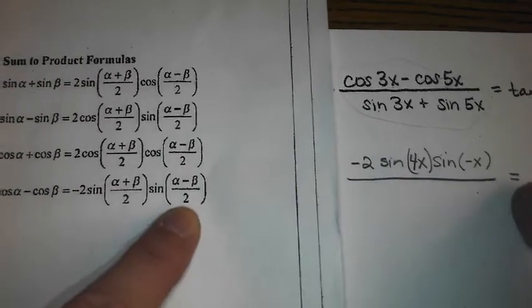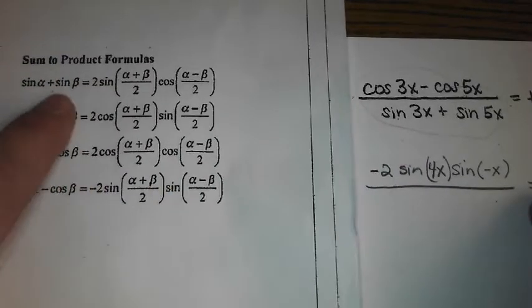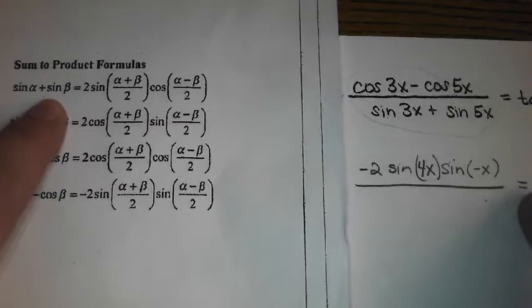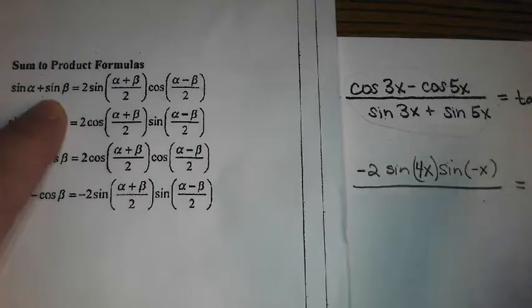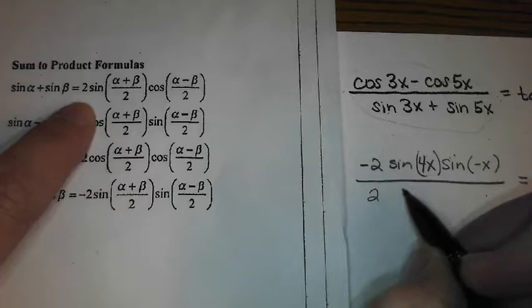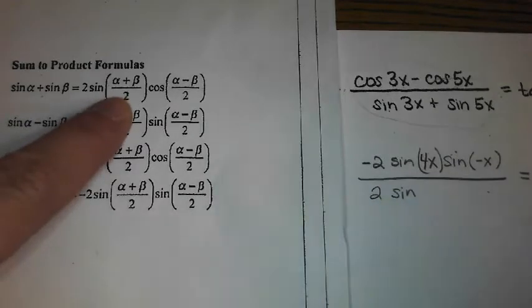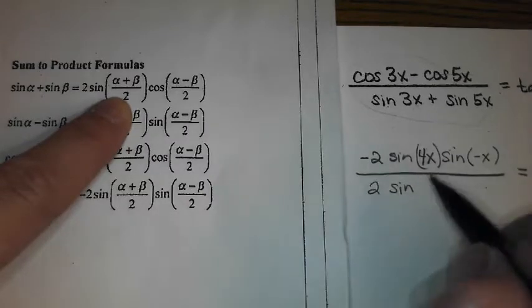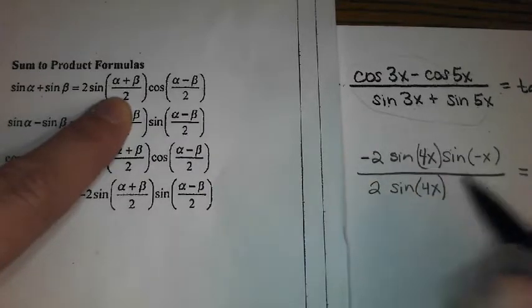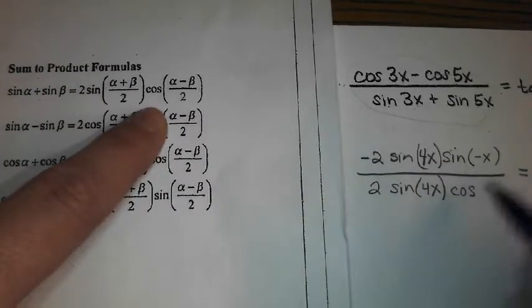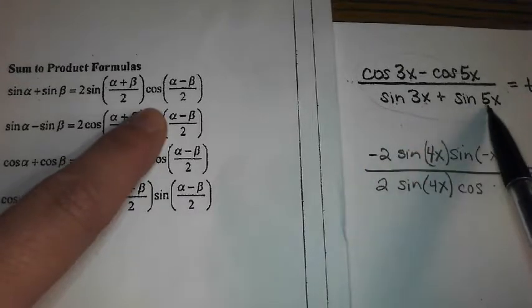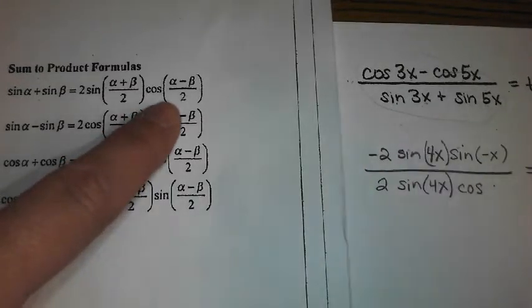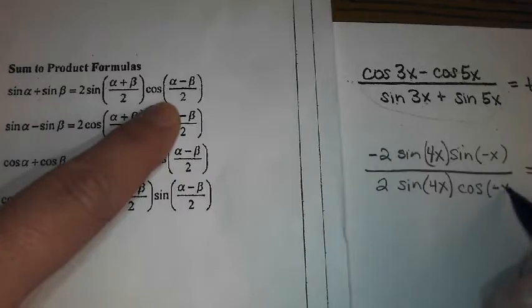Denominator is sine plus sine. So that's equation number 1 under the sum to product. So that's 2 sine, alpha plus beta on the bottom again is 8x over 2 is 4x again. Cosine, cosine alpha minus beta, 3x minus 5x is negative 2x divided by 2 is negative x again.